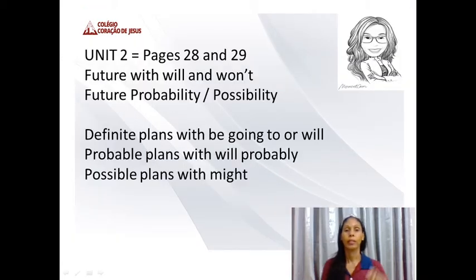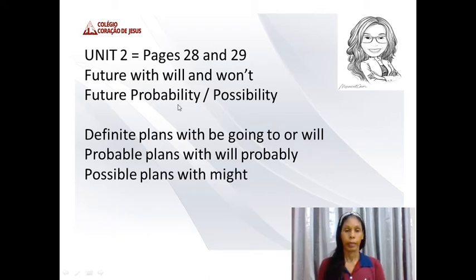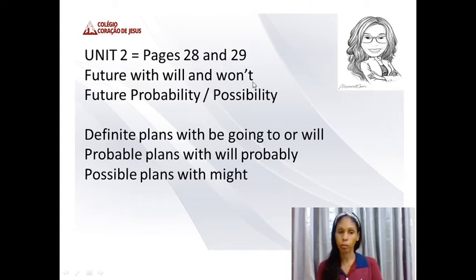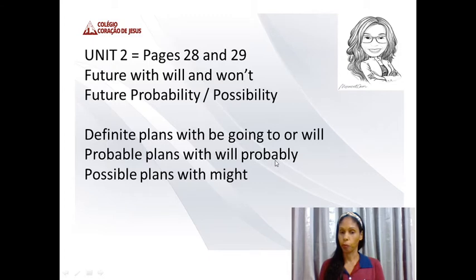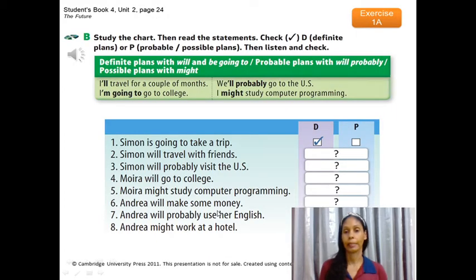Let's see unit 2, pages 28 and 29. In these pages we are going to see the future with will and want, future probability and possibility, defined plans with going to or will, probable plans with will probably, and possible plans with might.